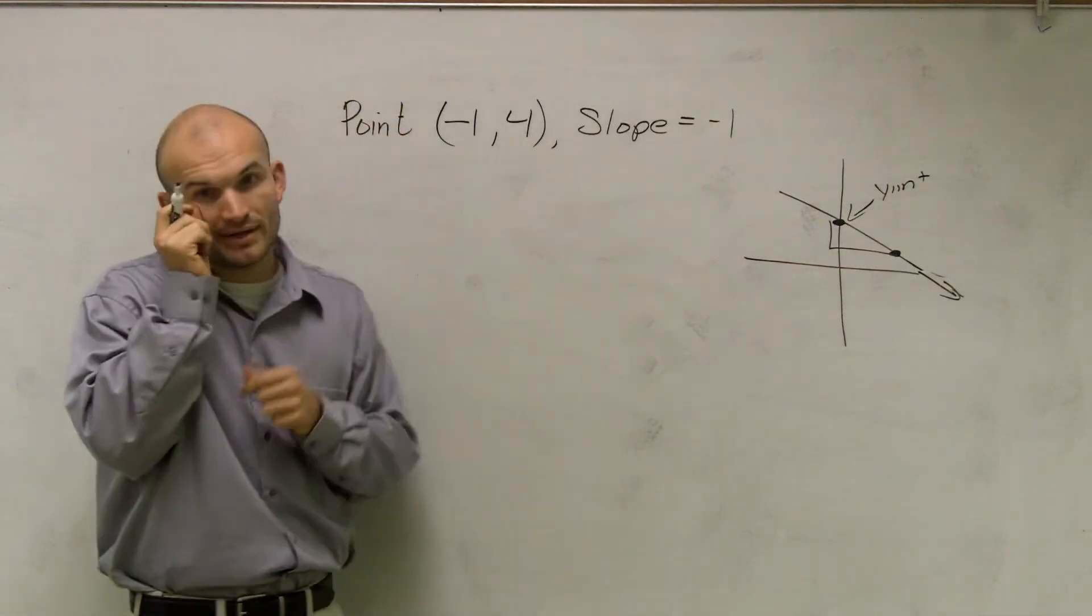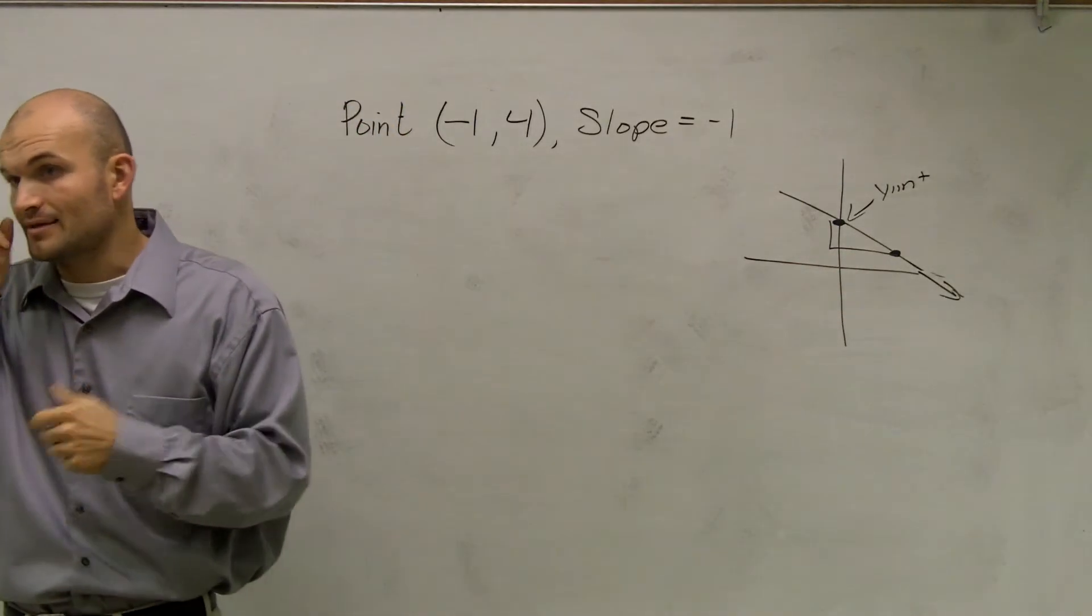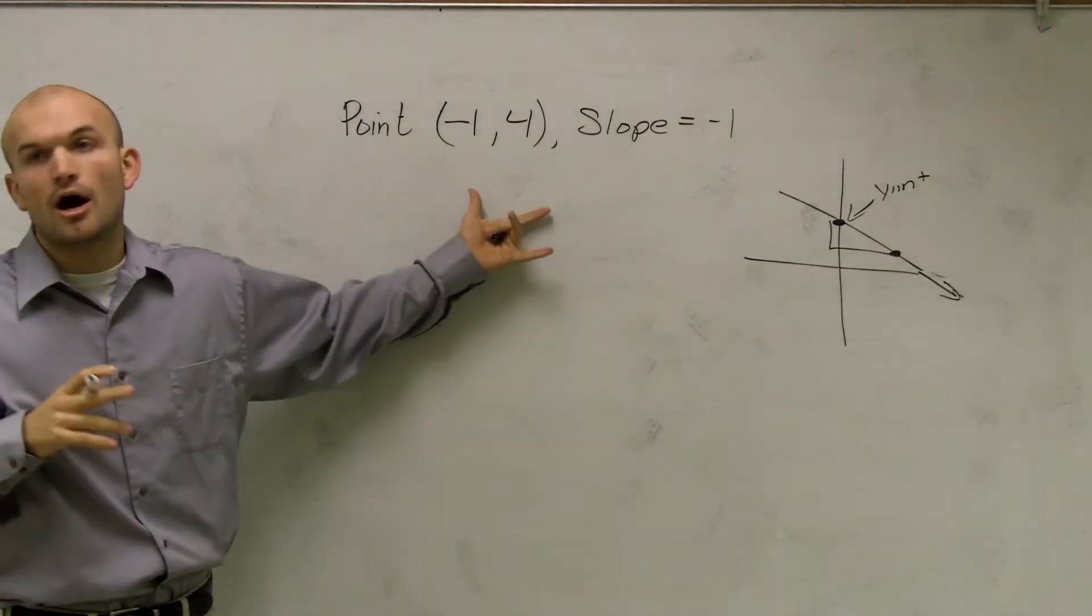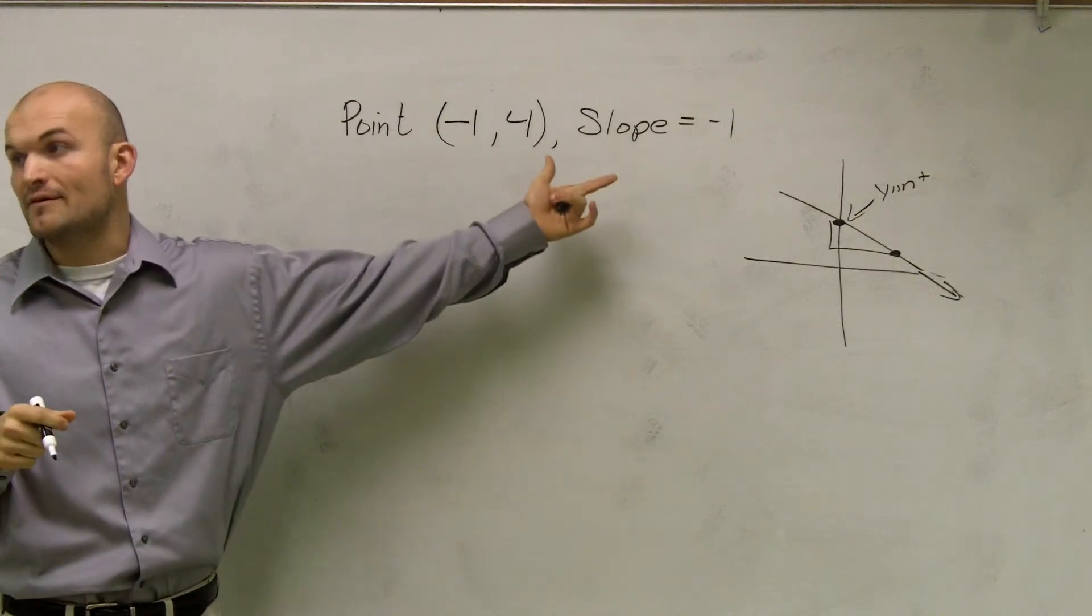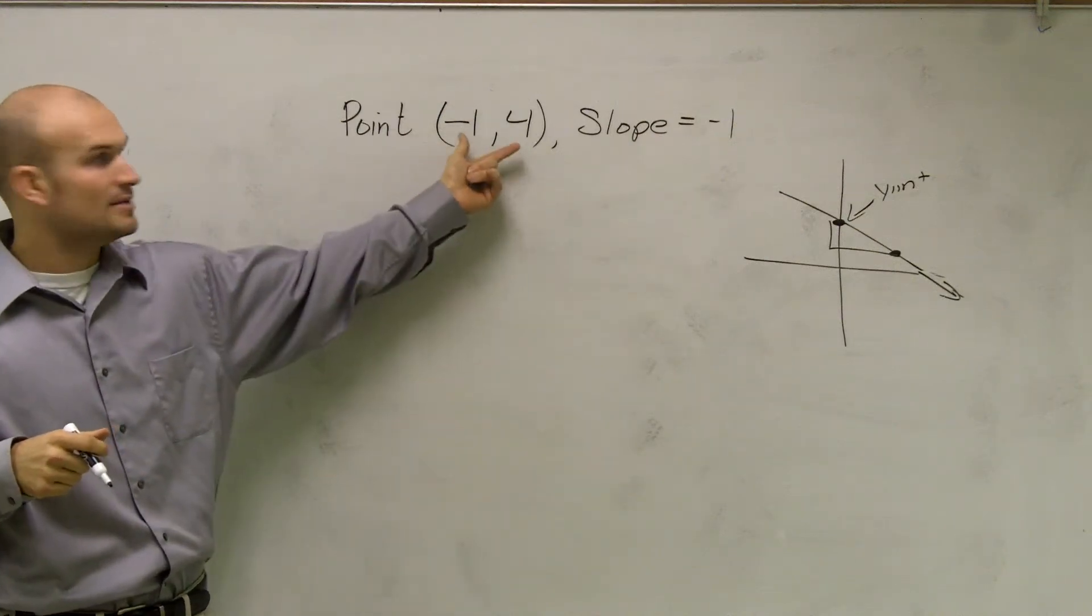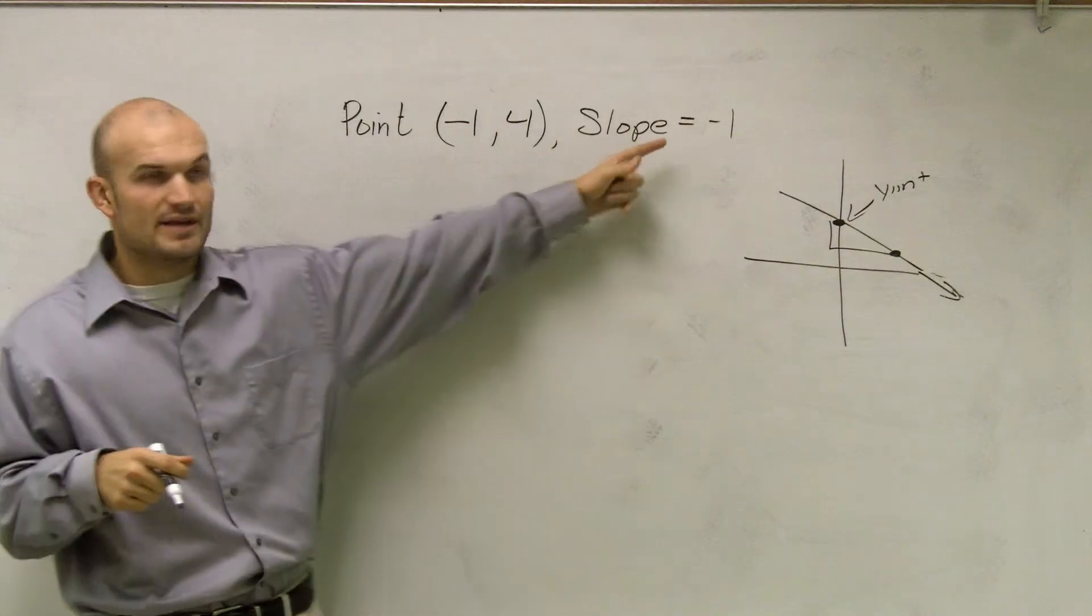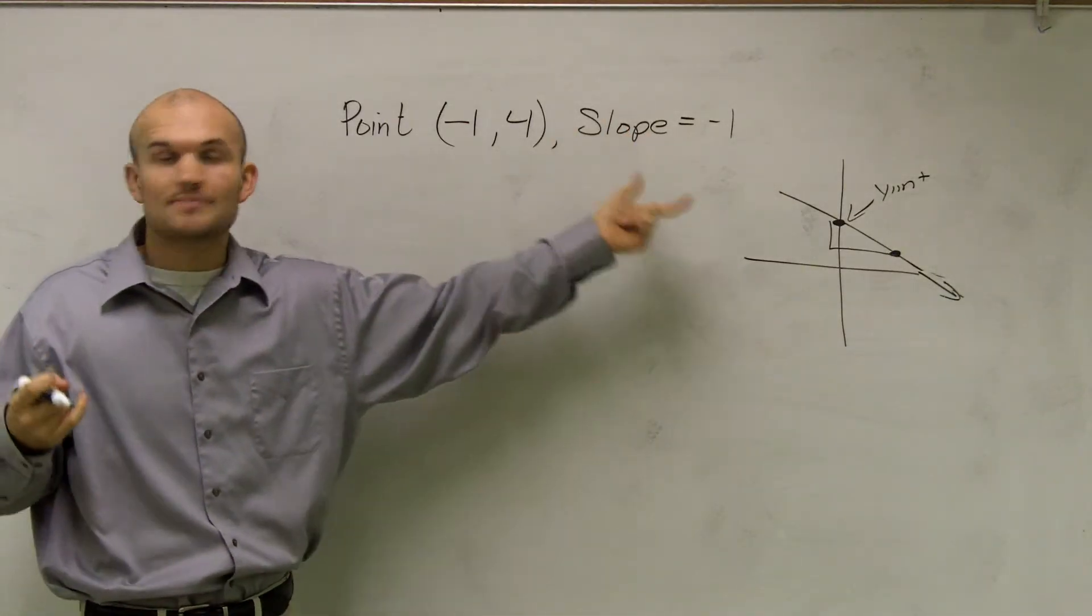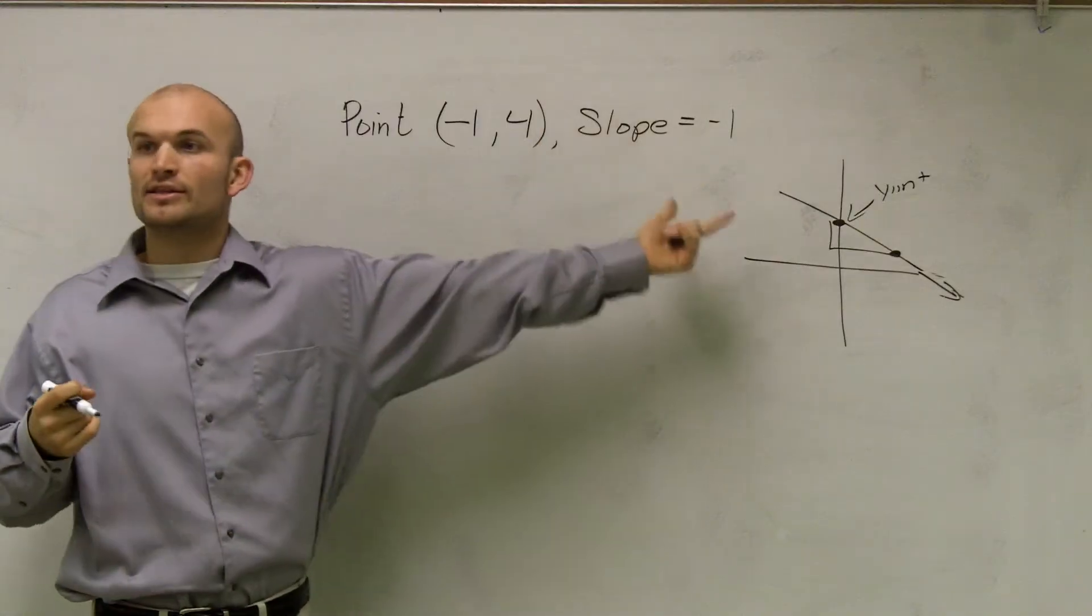Well, what if we're just given a point and a slope, and they say, you know, just find it algebraically? You could always, guys, always flip over a piece of paper and graph this, OK? You guys can plot the point negative 1, 4, and then use the slope to find the y-intercept. Once you find the y-intercept, you're already given the slope. You could write the equation of the line.